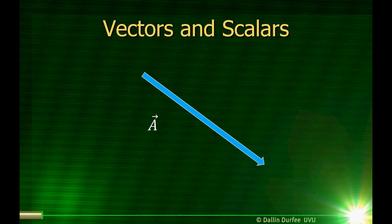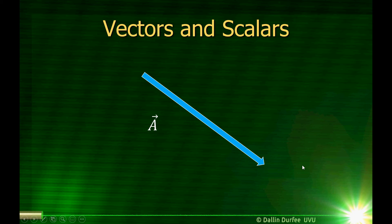50 meters that way — that's a vector. 50 meters east, 10 meters north, those are vectors. They have a magnitude and they have a direction. Mathematically, we tend to put an arrow over a variable if that variable is a vector, just to remind us this is a vector — it's not just a number, it's a number and a direction. Graphically, we can draw vectors as arrows that point in a certain direction, and their length is proportional to the magnitude of the vector.